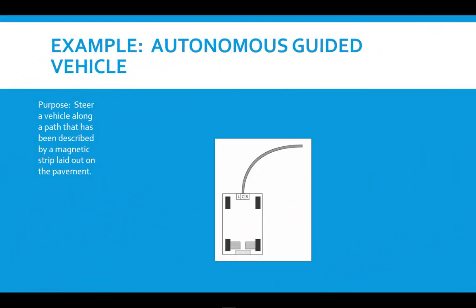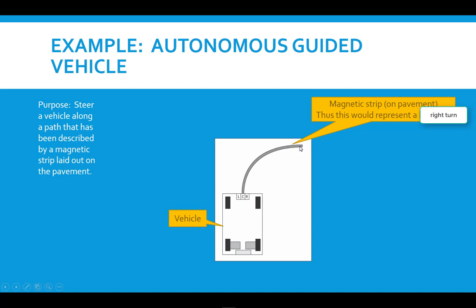So what this example is, is an autonomously guided vehicle that's shown here. The vehicle is just this cart, as we'll see, and it is to proceed along a path that's described by a magnetic strip that's been placed upon the pavement. And what this represents here—well, here's the vehicle first off, and then here's the magnetic strip. Since the strip is not going straight ahead but turning off to the right, this would represent a right turn.